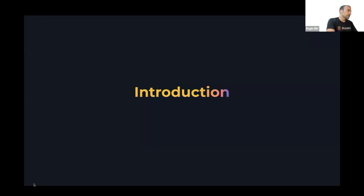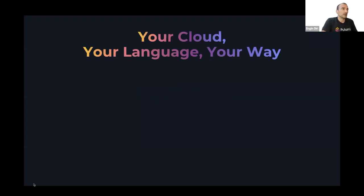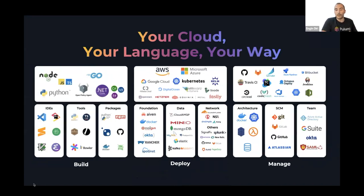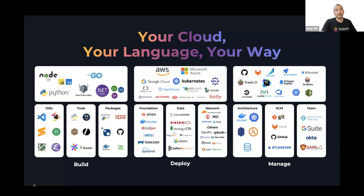With Pulumi, you have three pillars: build, deploy, and manage. On the build side, you can use your existing programming language — Python, Go, etc. — reuse your IDE of choice, and your package manager. There's no change for you; you just import the library. Then you choose from a huge variety of providers. For AWS in Python, you simply import the pip package into your IDE and start programming your infrastructure.